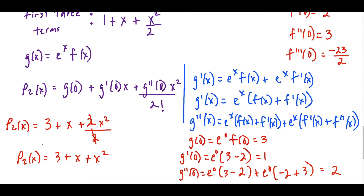So our solution for part B is 3 + x + x². This is a direct approach — you could also use the method from the scoring guidelines of multiplying the McLaurin series terms by the polynomial from part A and truncating at x squared.